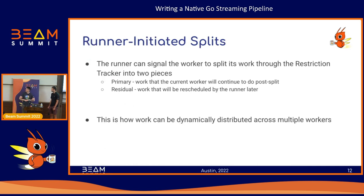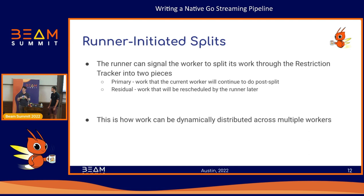Mechanically, this is split by the runner. The runner can signal to the worker that it's detected long-running data, that it's a big process, and it wants to split and distribute to another worker or reschedule it for later. This splits into two pieces: a primary piece that the current worker will continue working on, and a residual that gets rescheduled. This is how runner-side splits work — the runner dynamically rebalances by calling a split function on the restriction.